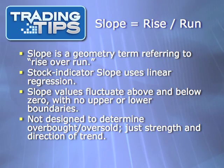You may remember slope from geometry class. In both cases, slope measures rise over run. In the case of the stock indicator, this is applied to a linear regression which best fits the price series. Using slope, values will fluctuate above and below zero. But unlike most momentum oscillators, there are no boundaries. Slope is not designed to determine if a stock is overbought or oversold, but only to indicate the strength and direction of trends.